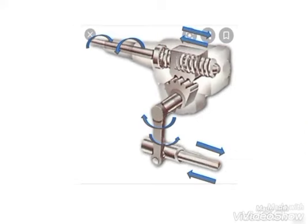Now, indicating the direction of motion by sliding through the components — you can see the direction of motion of all the components in the recirculating ball type steering gearbox.